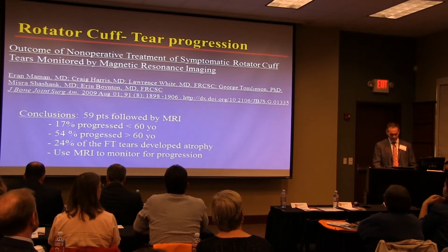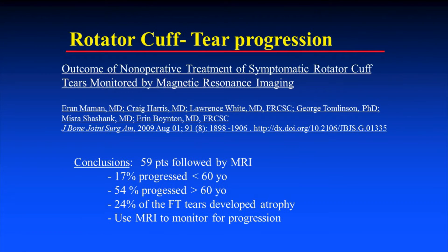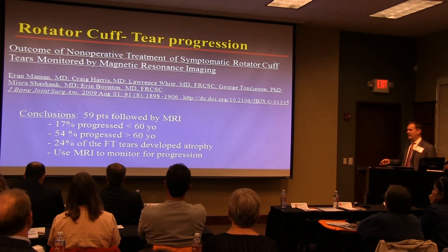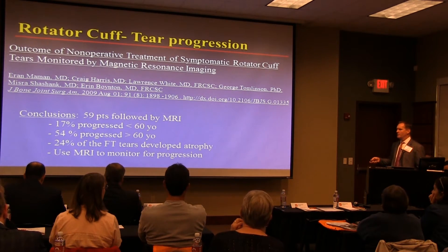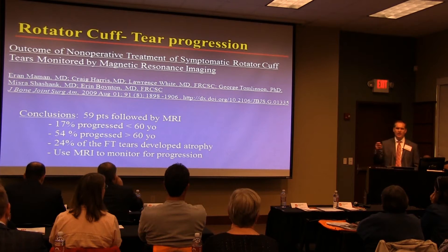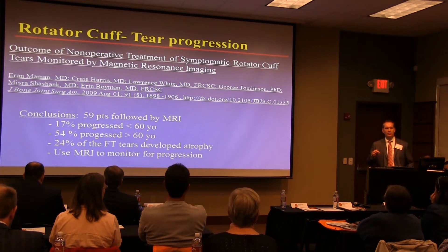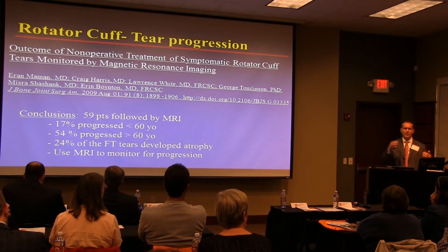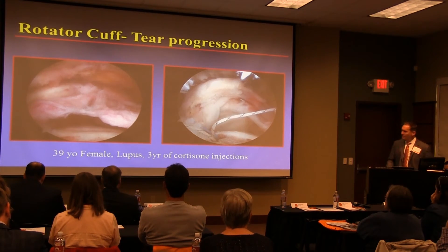A 2009 study on tear progression of non-operatively treated symptomatic rotator cuff tears monitored by MRI followed 59 patients. Seventeen progressed. Under 60 years of age, 54% progressed; over 60, 24% progressed. Twenty-four percent of full-thickness tears developed atrophy — which is irreversible. If you're following someone with a rotator cuff tear and the tear becomes larger, retracted, and atrophic, when those patients go for repair they won't do as well. Do an MRI yearly if following them — don't just do cortisone injections for four years.